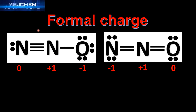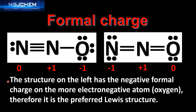In this last example we're going to look at two possible Lewis structures for N2O. The Lewis structure on the left has the nitrogen atom with a plus one formal charge and the oxygen atom with a negative one formal charge. The Lewis structure on the right has one nitrogen atom with a formal charge of negative one and the other nitrogen atom with a formal charge of plus one. The structure on the left has the negative formal charge on the more electronegative atom — oxygen — therefore it is the preferred Lewis structure.